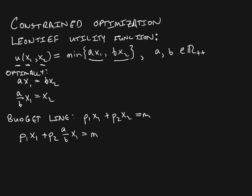Now we can solve for X1 in terms of the parameters — the price of good one, the price of good two, A, B, and income M. Factoring out X1, we get X1 times (P1 plus P2 times A over B) equals M. Dividing, the optimal consumption X1 star equals M divided by (P1 plus A over B times P2).